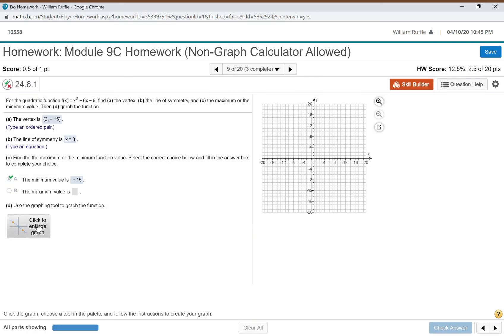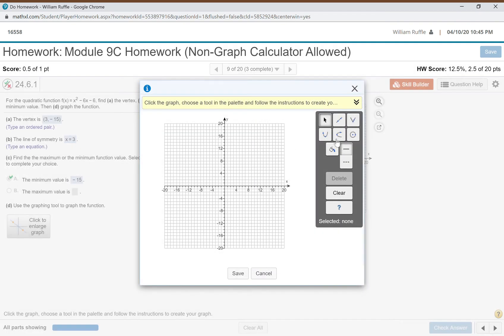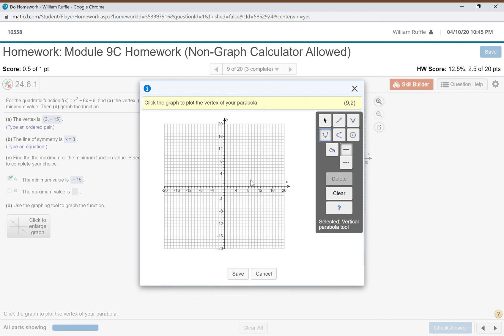Again, I'm going to make this bigger. It's the vertical parabola tool, so I just need the two points. I need to plot the vertex first and that's 3, negative 15. Go to 3, all the way down. Oops, let's go to positive 3 because that's positive 3, negative 15. There's 3, negative 15. Click.